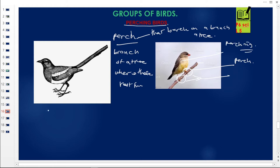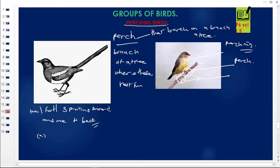Before we go further, when we look at the toes or feet of perching birds, they have three toes pointing forward — one, two, three — and one toe pointing backwards. This is commonly asked in exams. The question is: what enables perching birds to rest on branches of trees? It is the arrangement of their toes — three pointing forward and one pointing backwards — in order to hold a branch firmly.